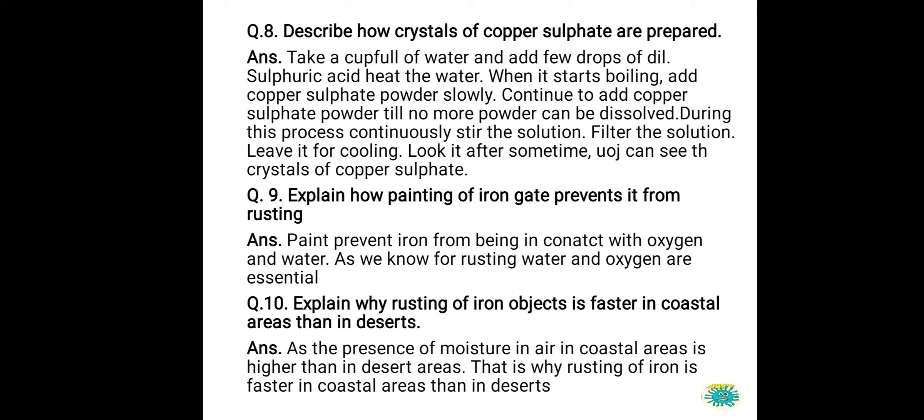Question number 8: describe how crystals of copper sulphate are prepared. First, take a beaker full of water. Then add a few drops of dilute sulphuric acid to it. Heat the water, and when it starts boiling, begin adding copper sulphate powder slowly.